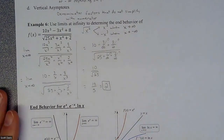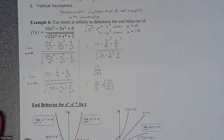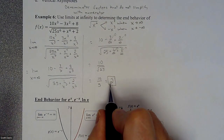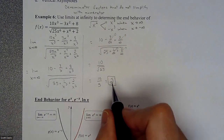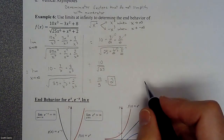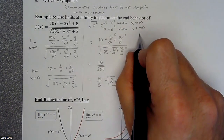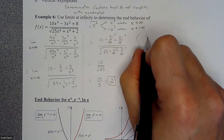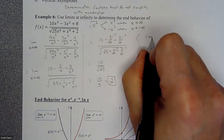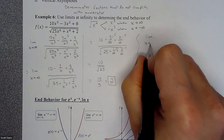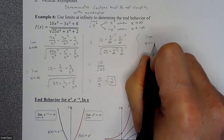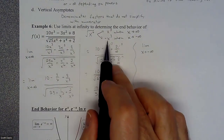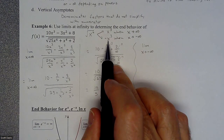So when we graph this and look to the right, the graph would be approaching 2 on the right. Here's where it gets a little bit tricky: when you're going to negative infinity and you have an odd power, you would want to divide but treat it like a negative x to the third.